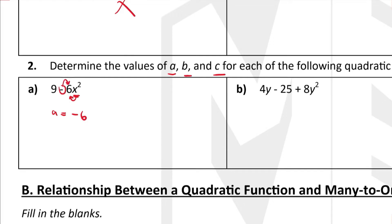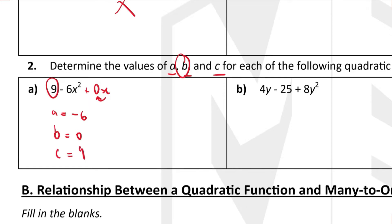Next we look for b, the coefficient of x. In this equation we don't have any x term, so it is actually plus 0x, which makes the coefficient of x equal to 0. Therefore b equals 0. And c is just the constant number, which is 9, so c equals 9.